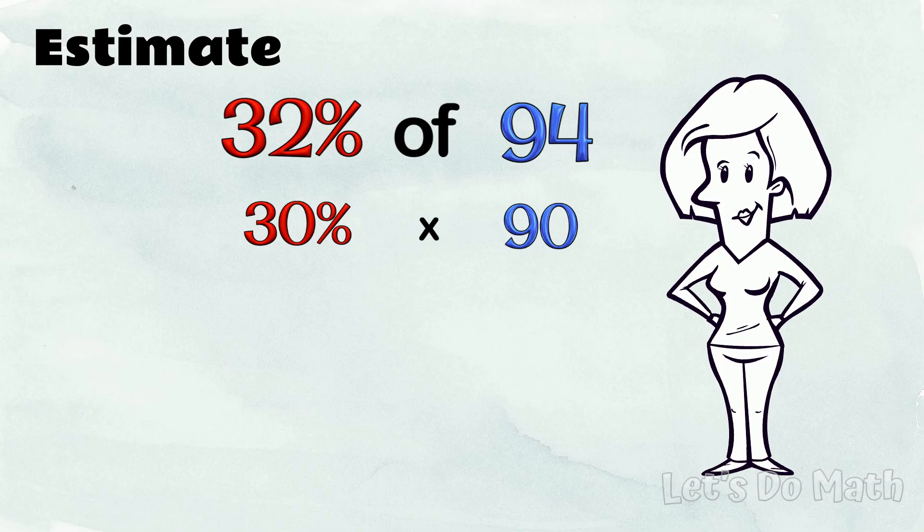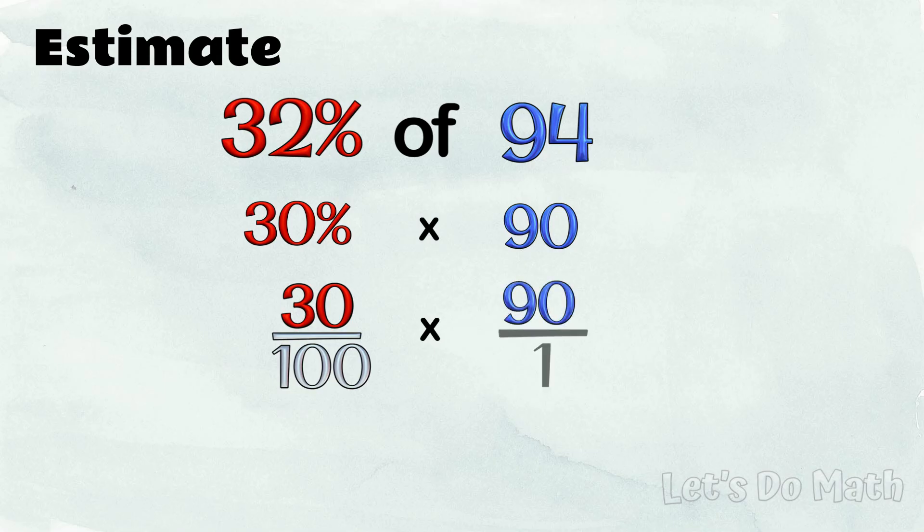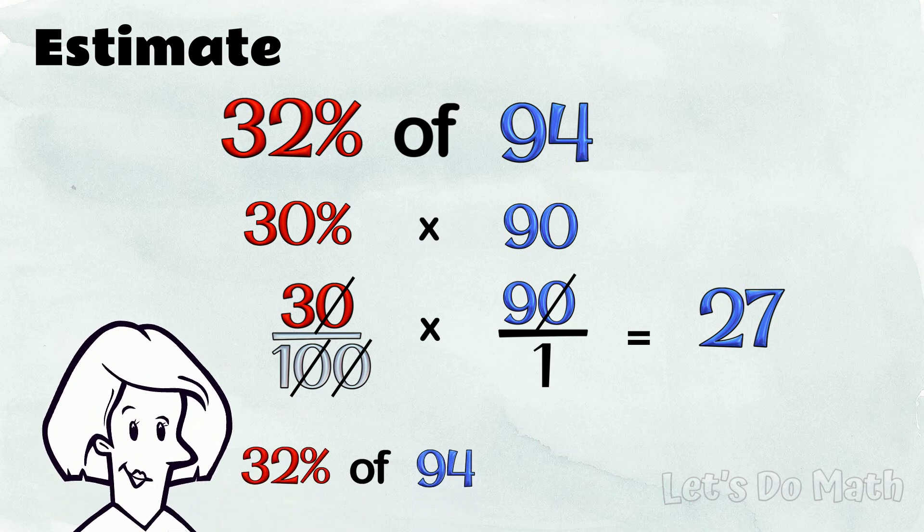30% of 90 can be shown as... I can cancel tens here and here! Multiplying out, 3 times 9 is 27. So 32% of 94 is approximately 27.